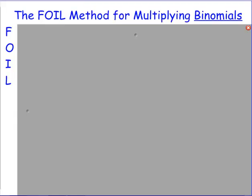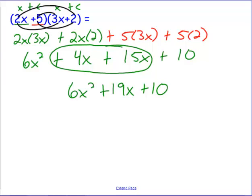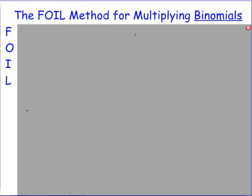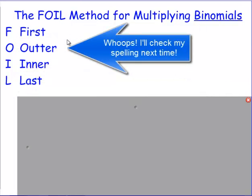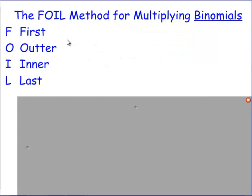So the FOIL method is what will help us multiply binomials. This will remind you the order to take when you're presented with two binomials to multiply. FOIL is an acronym standing for First, Outer, Inner and Last. If you can remember that you're going to take the first terms times each other, the outer terms times each other, the inner terms times each other, and then the last terms times each other.